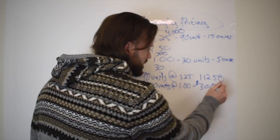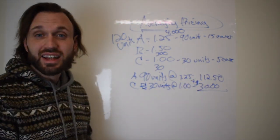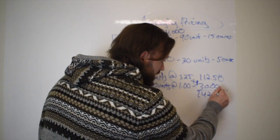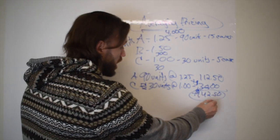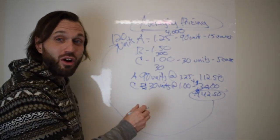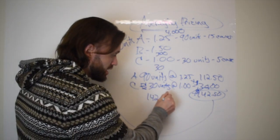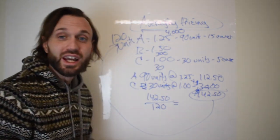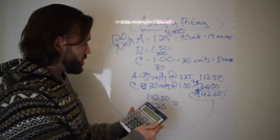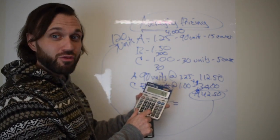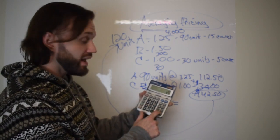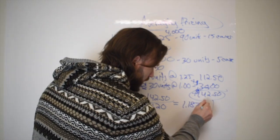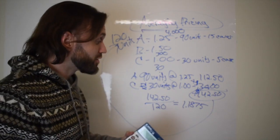We add those two totals: $30 + $112.50 = $142.50, which is the total cost for 120 units. Now we take $142.50 and divide it by 120 units to get our new unit cost. So $142.50 ÷ 120 = $1.1875 per unit.